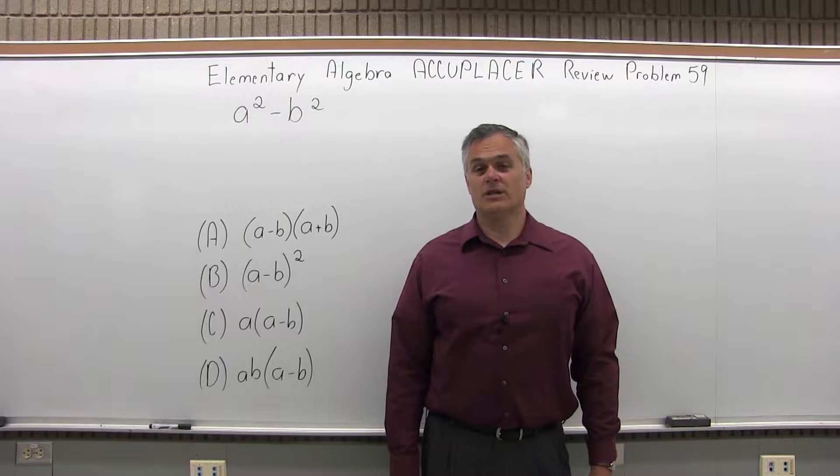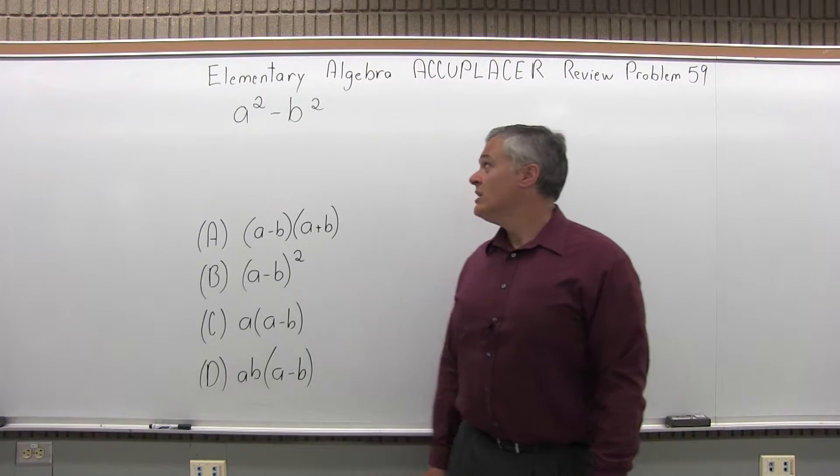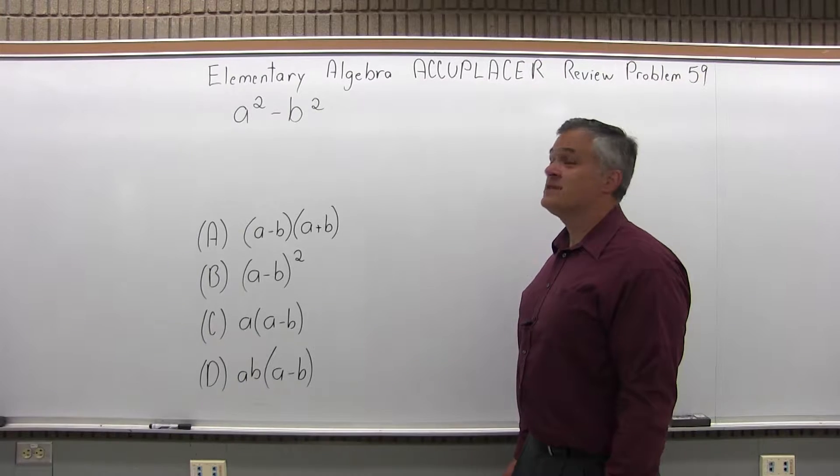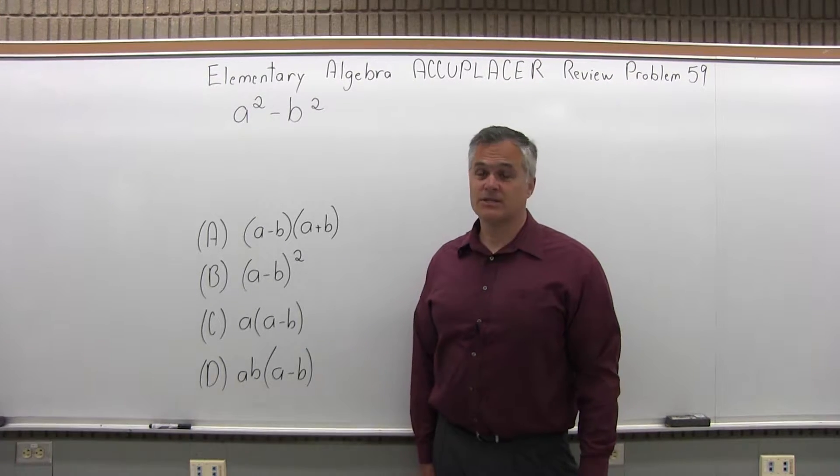This is the Elementary Algebra Accuplacer Review, Problem 59. We have a squared minus b squared and we want to see which one of four options that matches up with.